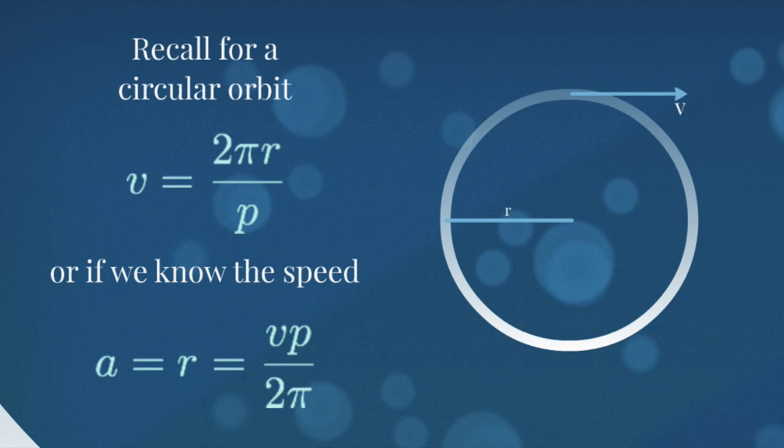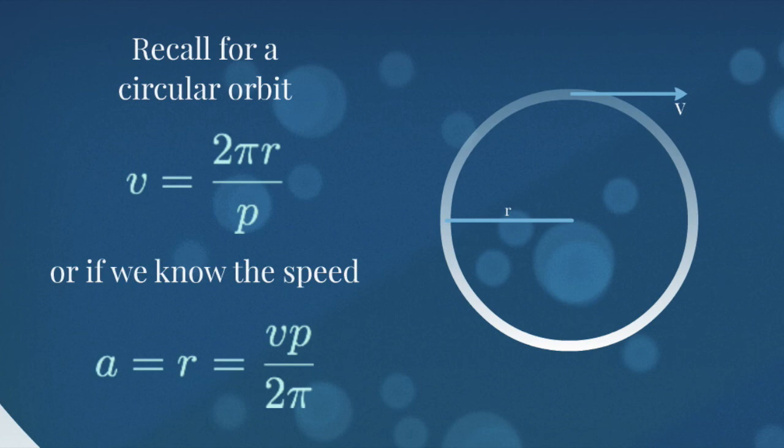And if we want to know the average separation, we can rearrange that and measure the speed times the period divided by 2π gives us the average separation. We can use that separation in Newton's version of Kepler's third law, along with the period, and solve for the mass of the system. So this is a very nice way to solve for the mass of a star.